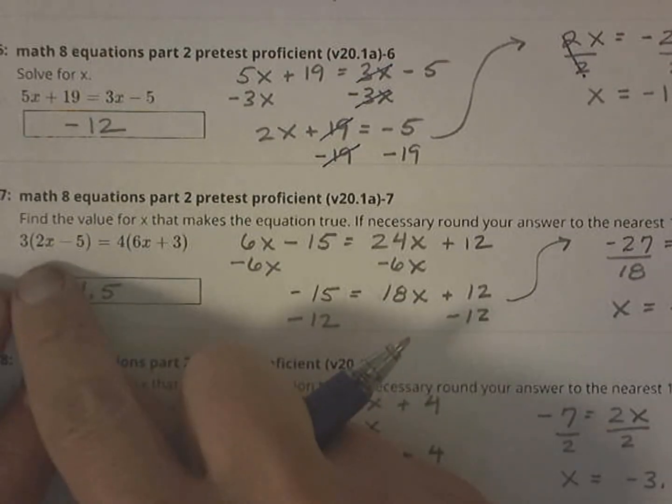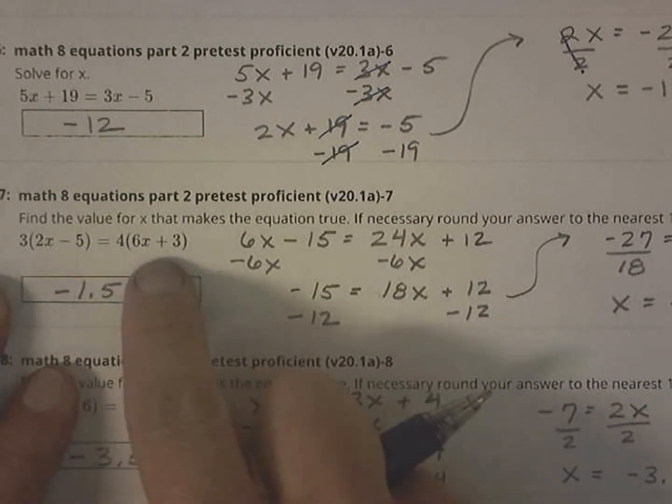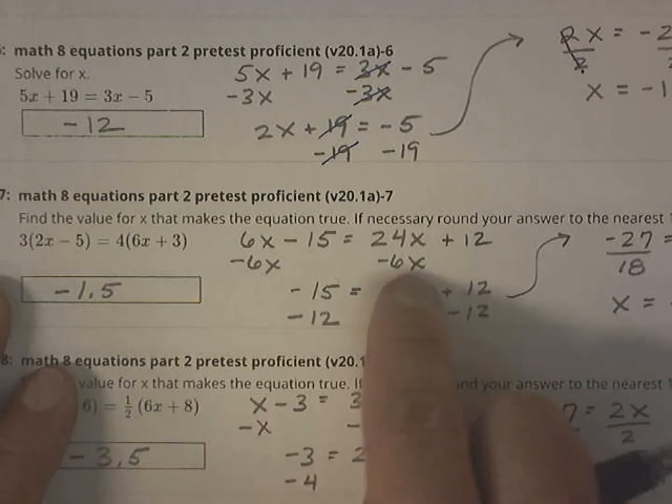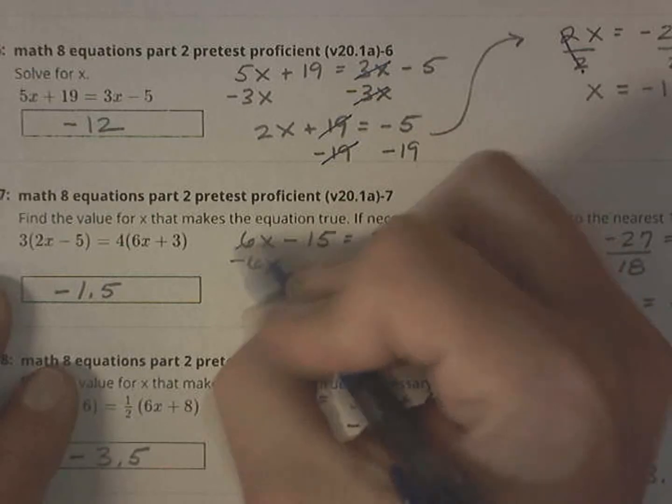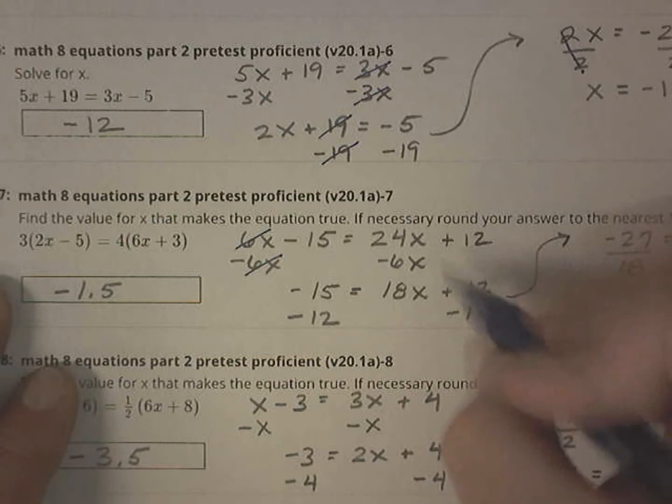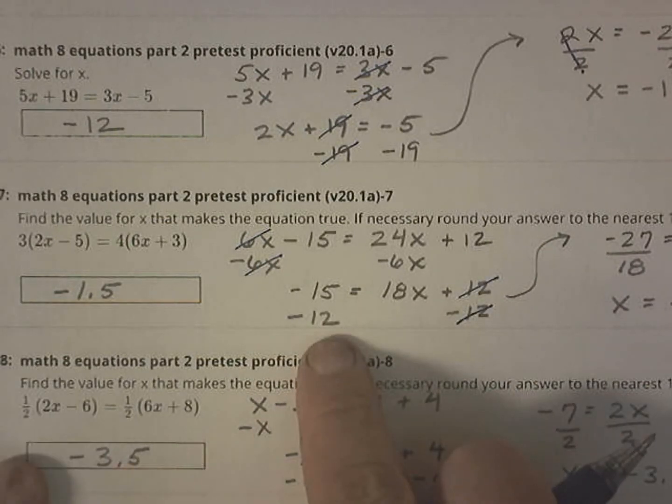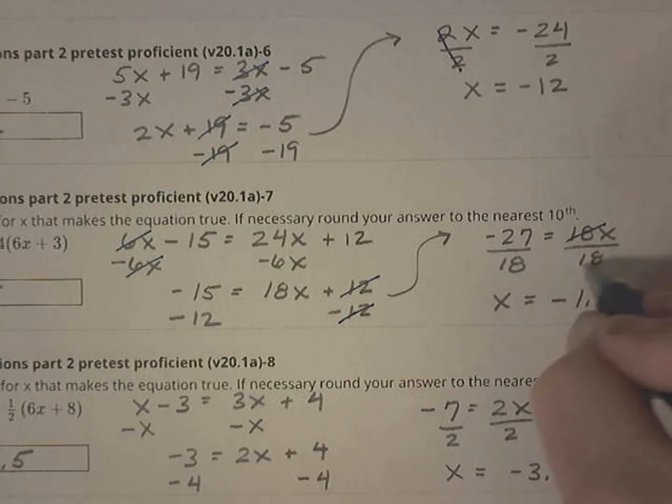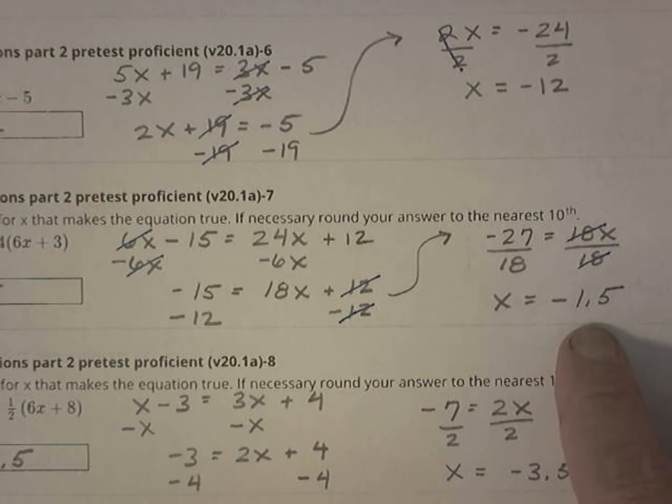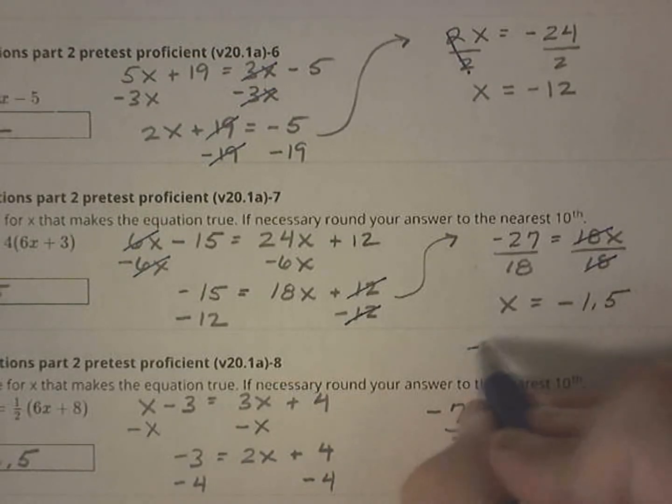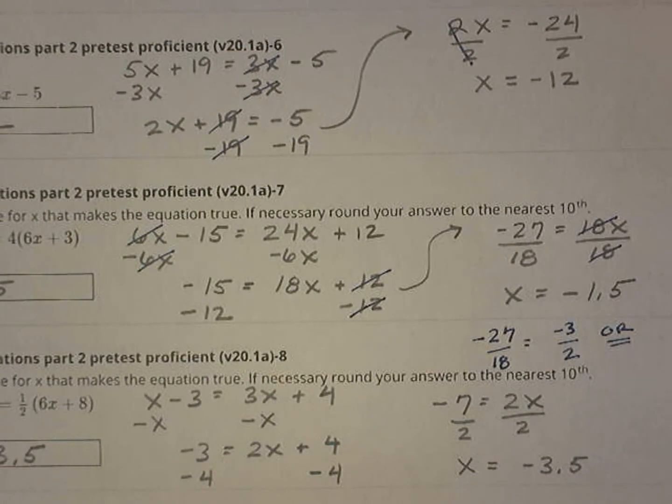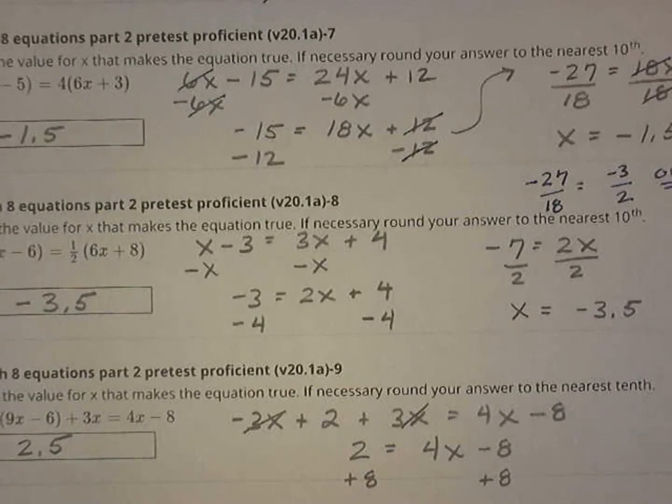Similar type of problem, but this time I have to distribute. So I started with the distribution. 6x minus 15 equals 24x plus 12. I need to get all my x's to one side. I chose to subtract 6x from both sides. That way my x's would stay positive. These cancel out. Negative 15 equals 18x plus 12. Subtracting 12 from both sides, they cancel out. Negative 15 minus 12 is negative 27. Negative 27 equals 18x, dividing both sides by 18. And it simplifies down to a negative 1.5. I guess you could also simplify it to negative 27 over 18, which is negative 3 over 2. Since it doesn't really tell you if it wants a fraction or a decimal, both are probably fine.